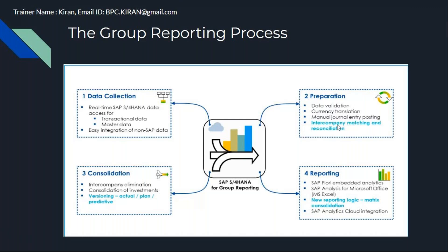If entities have different currencies and different fiscal year variants, you cannot consolidate directly. So you define one consolidation fiscal year variant and one consolidation currency, then perform currency translation to convert local currency data to group currency. On top of that, you can have manual journal entries for adjustments — such as reclassification entries like showing a gain on asset sale as other income in consolidation reports.